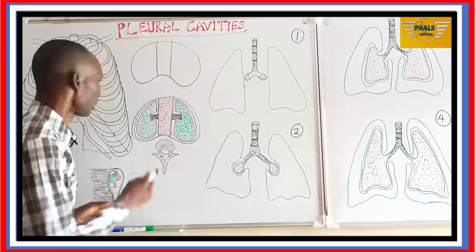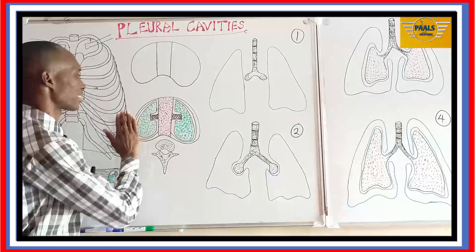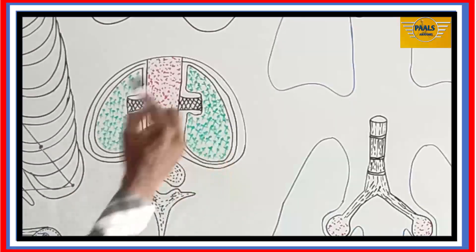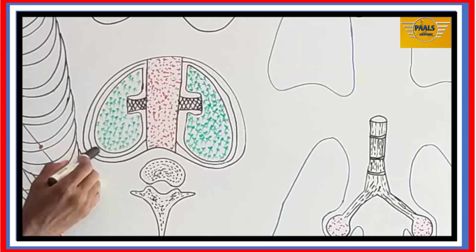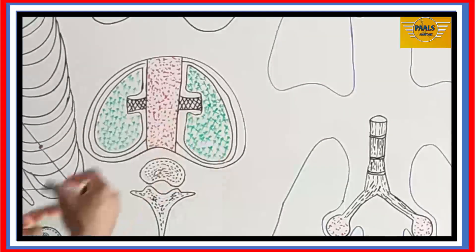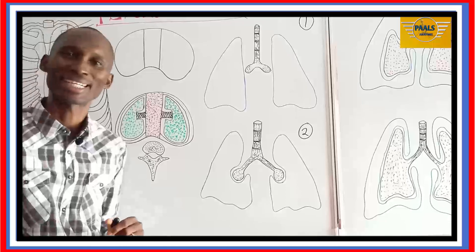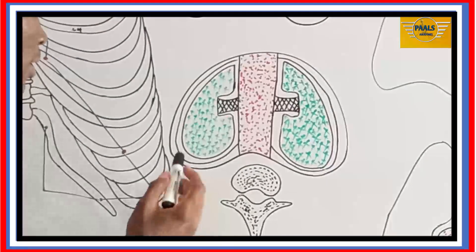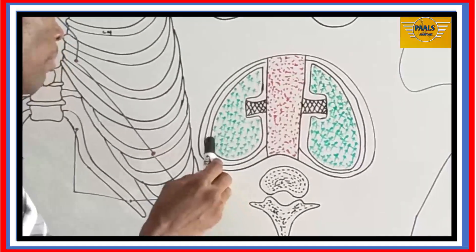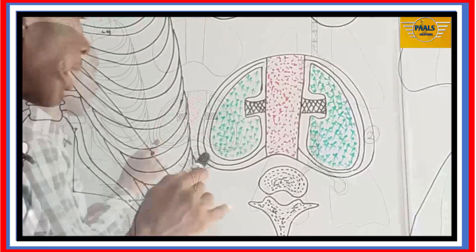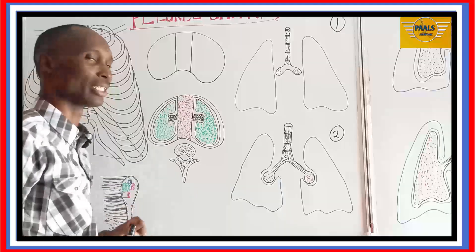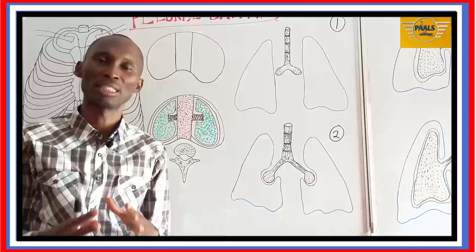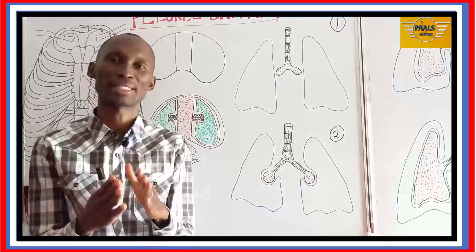This is a transverse section of the thoracic cavity. The thoracic cavity is this entire space — all these structures are found inside the thoracic cavity. That is to say, both the mediastinum at the center, both the smaller spaces, both the lungs, and the smaller spaces between the two layers of the lungs — which I will soon tell you is called the pleural cavity — are all components within the thoracic cavity. So simply defined, the pleural cavity is the space between the two layers wrapping the lungs.